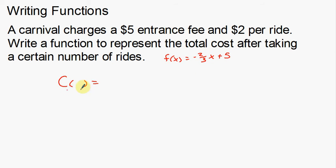In that example, I had F for function and X for the variable I'm going to use. I want to do the same thing for the carnival — C for the total cost is the name of the function. Now I've got to decide what variable to use. A lot of students like to use X, but I'm going to use something different to get you into the habit of using a variable that makes sense, so you understand what you're actually doing with the problem.